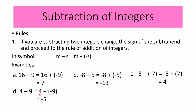Copy the minuend, change the minus sign to a plus sign, and get the opposite sign of 9, which is negative 9. So 4 plus negative 9 is equal to negative 5. Therefore, 4 minus 9 is equal to negative 5.